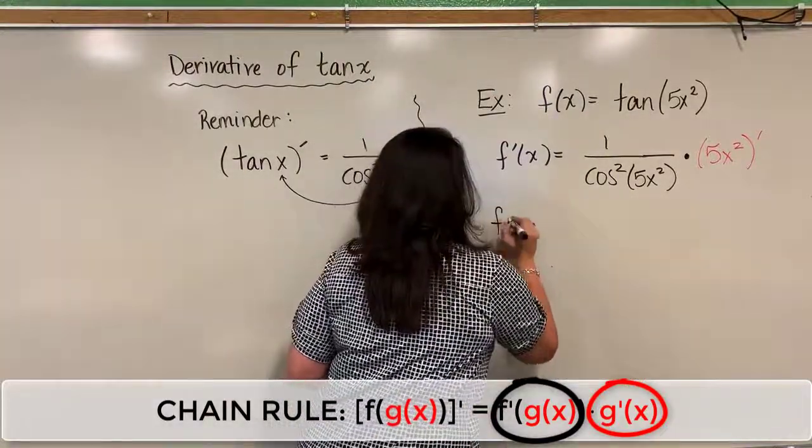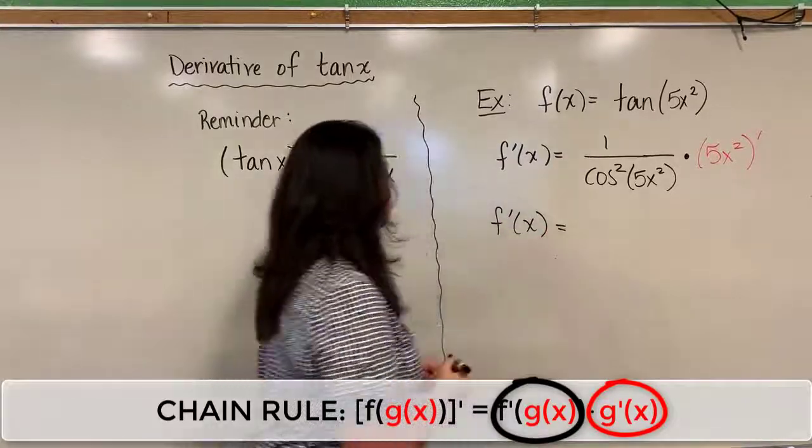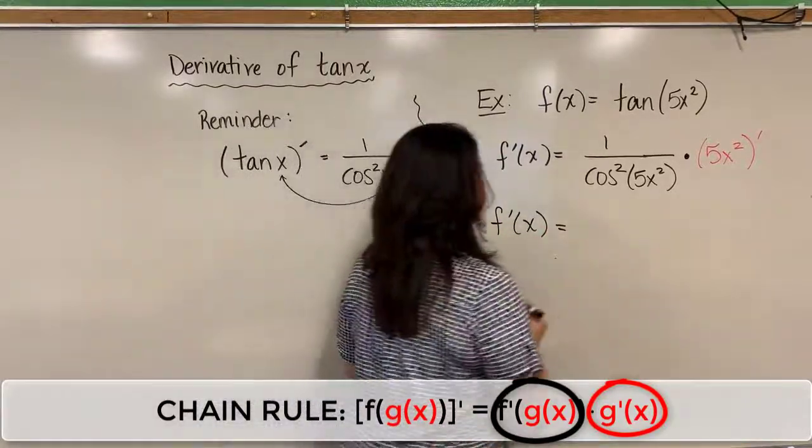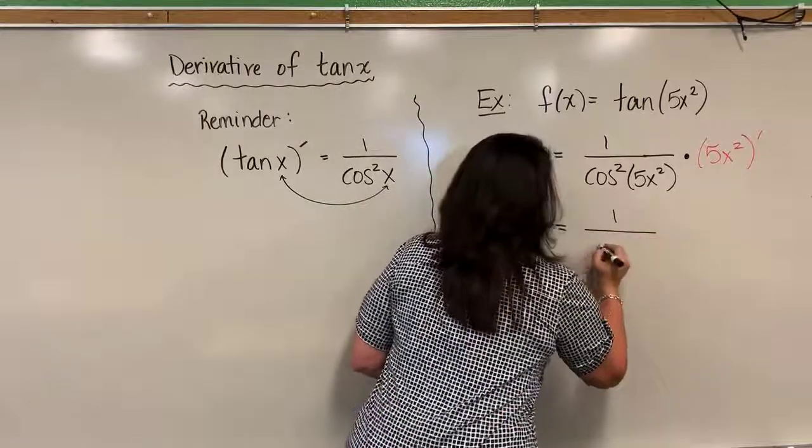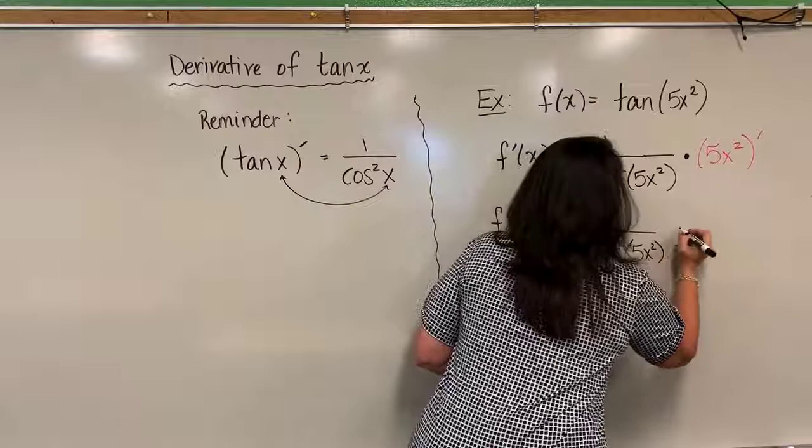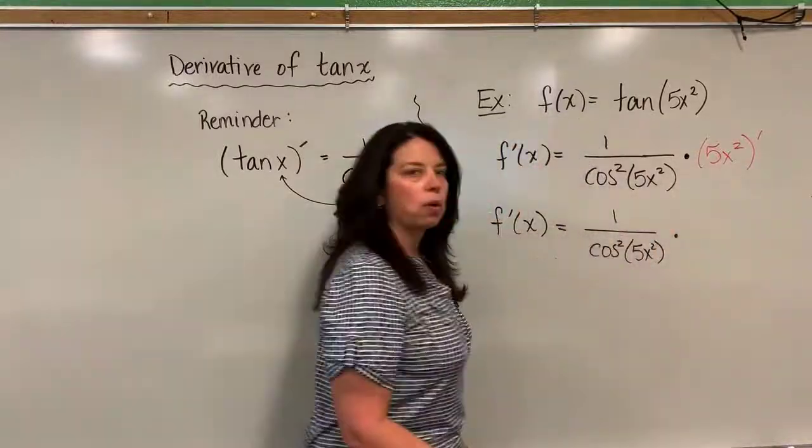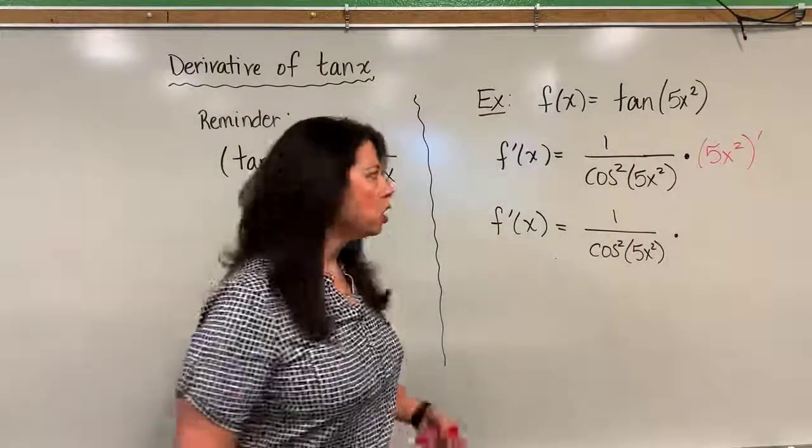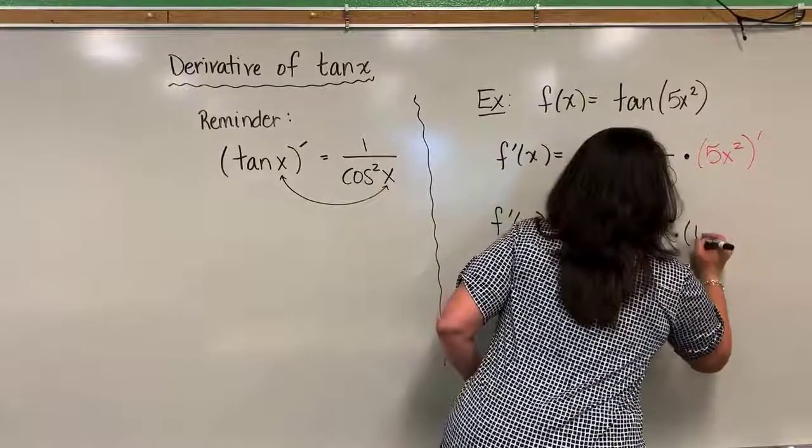So if I clean this up a little bit, I can now write f prime of X is equal to 1 divided by cosine squared 5X squared, times—and now just reveal what the derivative of 5X squared is—which in fact is going to give us 10X.